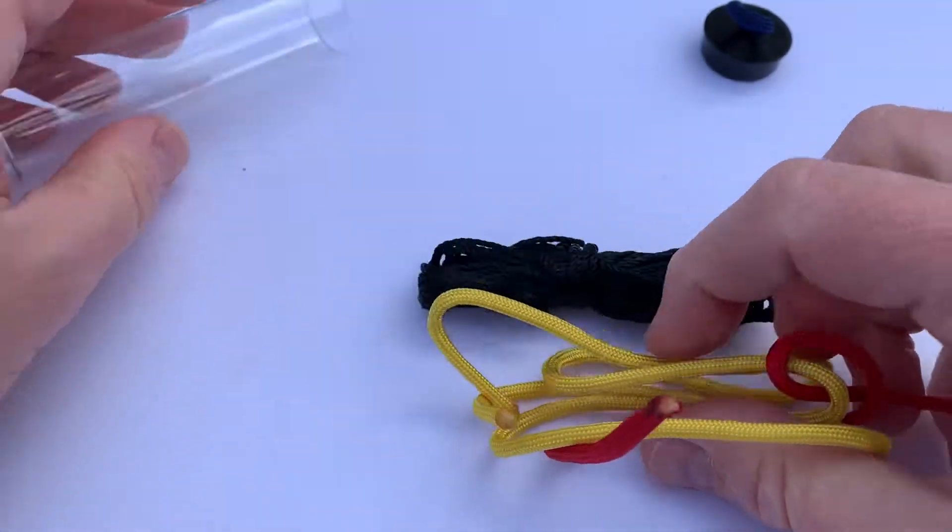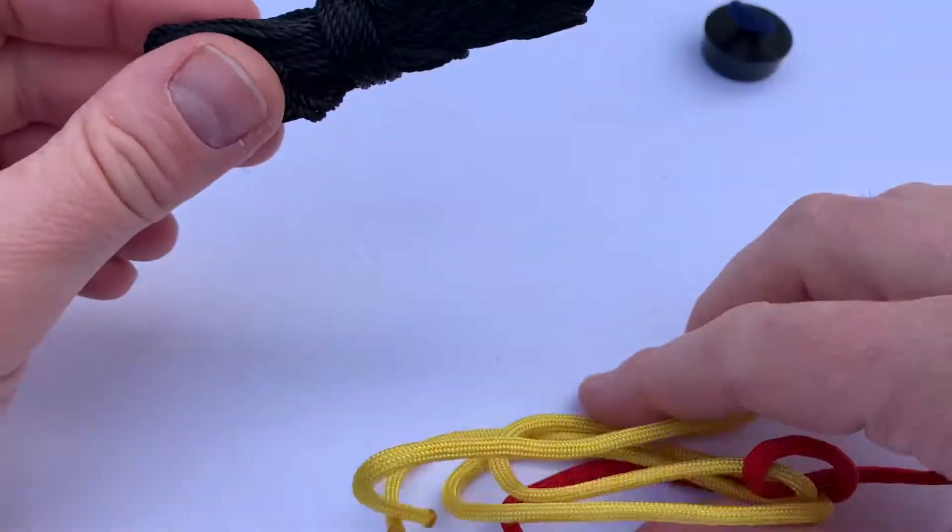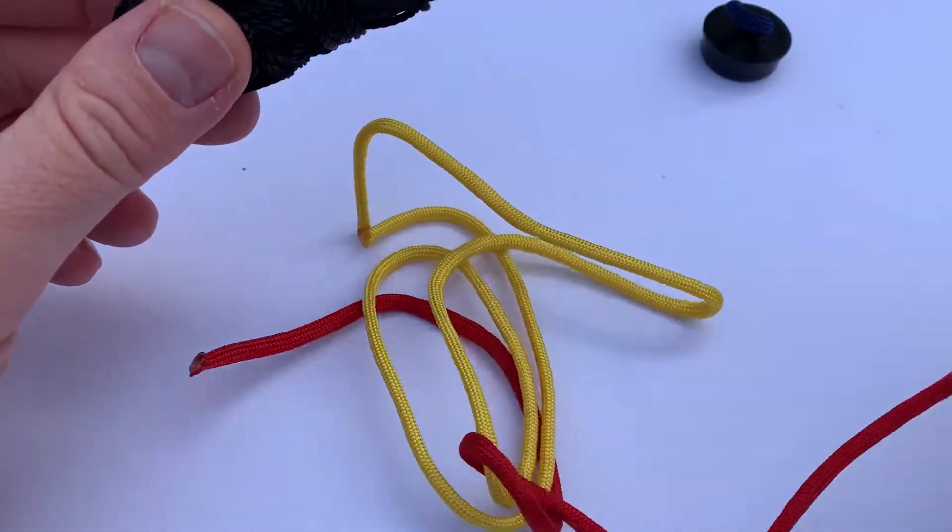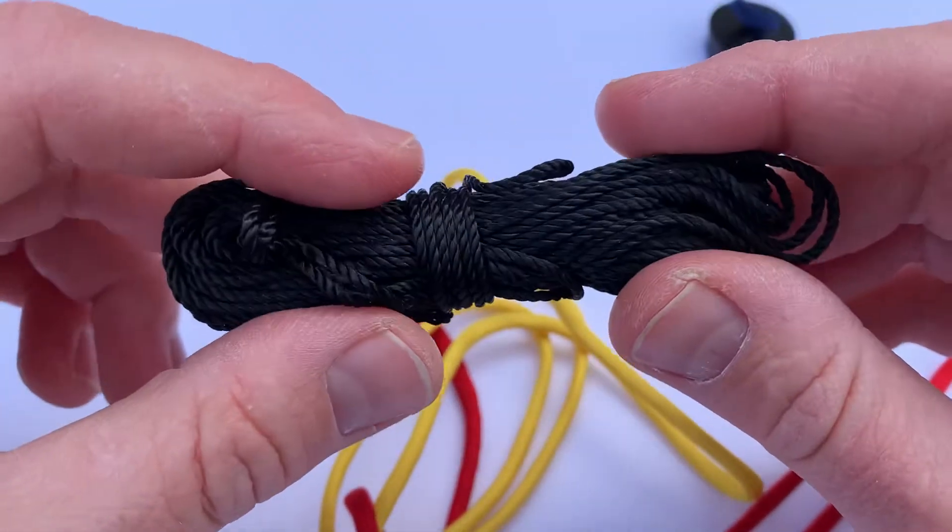If you follow Dave Canterbury, he'll talk about this as well - yes, paracord is great and very useful, but actually bank line, or tar line as some people call it,